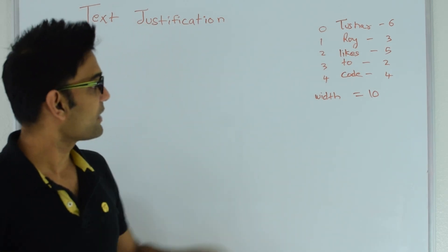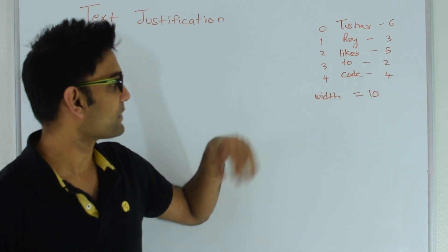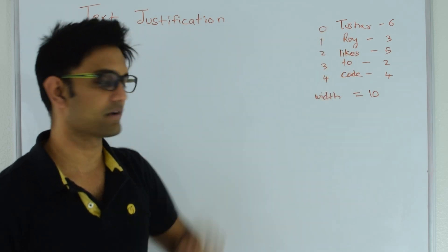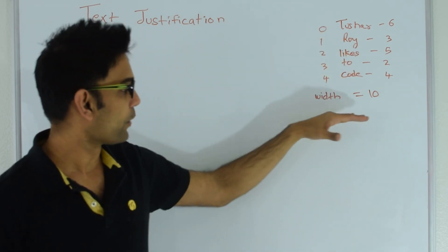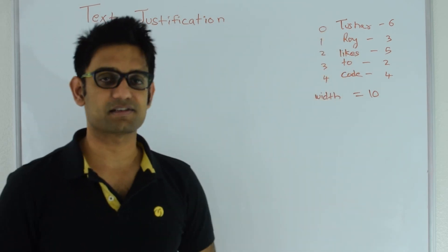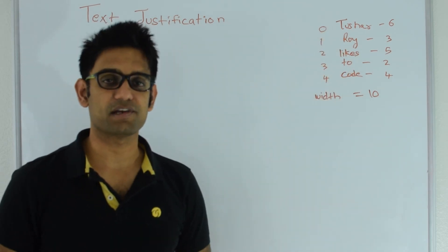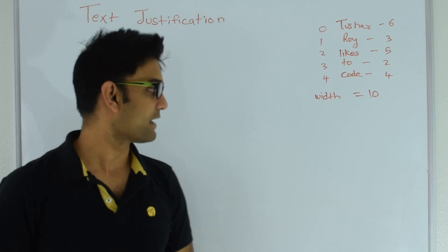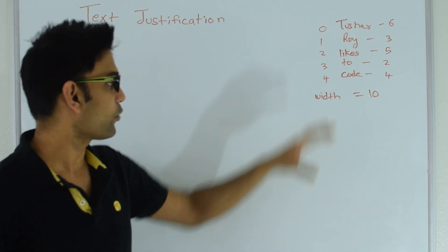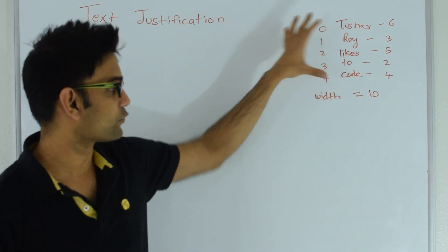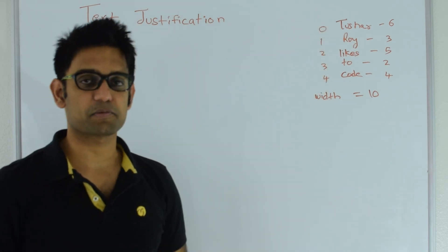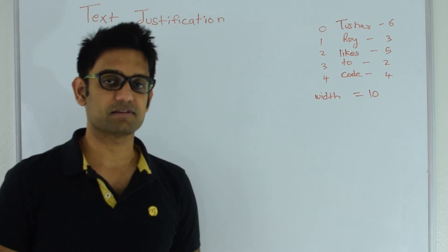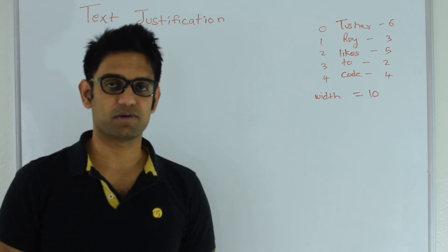So here I have 5 strings: Tushar, Roy, likes, to, code, and the width of my screen is 10. So I can have only 10 characters on every line. How do I arrange these words over multiple lines such that the number of empty spaces is evenly distributed?